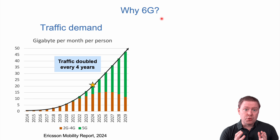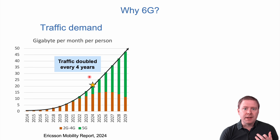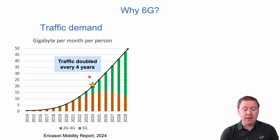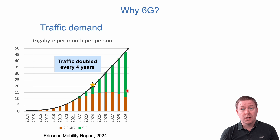With this in mind, why do we need 6G when 5G is still evolving? The traffic demand in cellular networks is increasing all the time — doubling roughly every year, at the same pace as data traffic growth on the internet. Most traffic is still carried by 2G, 3G, and 4G networks, but most new generated traffic will be carried by 5G networks. When that technology can no longer handle more traffic, we will need a new generation.